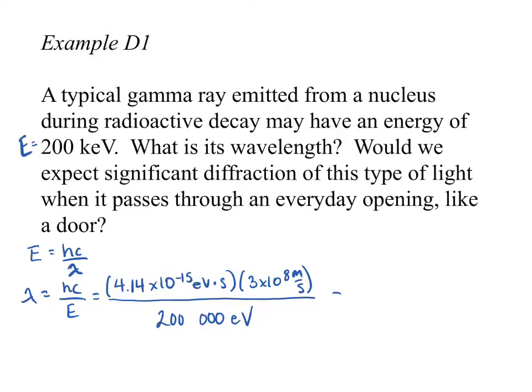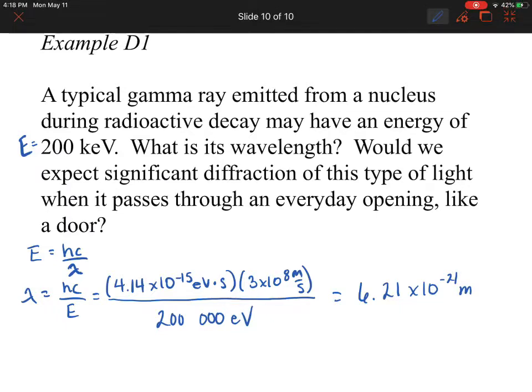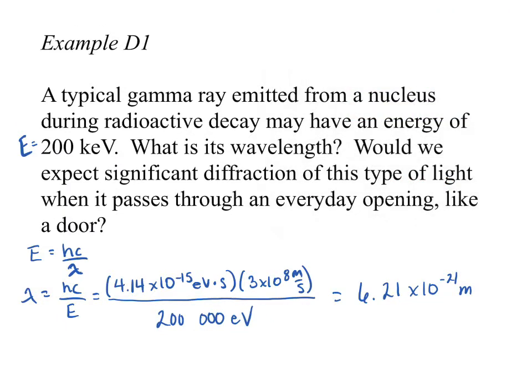And what do we get? I get 6.21 times 10 to the negative 21 meters. And that is the wavelength. Okay. So there we go. What's the wavelength of that photon?